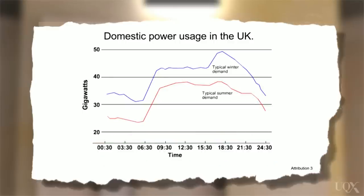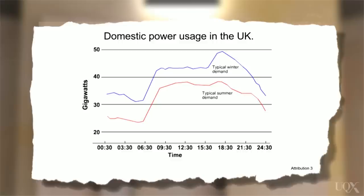Now let's look at the two lines and think about what information they're telling us. We should read what each line represents: the blue one is about the demand for power during the winter, while the red line is about power demand in the summer months. We notice that both lines have roughly the same shape, meaning power demand increases and decreases at about the same time of day in both summer and winter. However, during summer, people use less power at home than in winter. Another key feature is that the least amount of power is used early in the morning, while the highest demand is in the early evening.